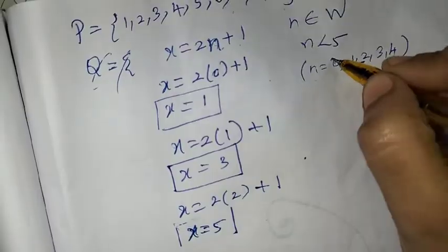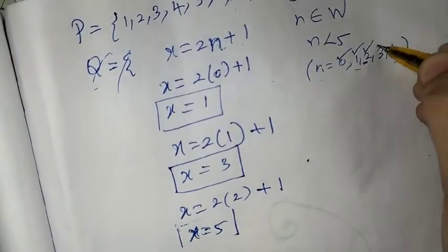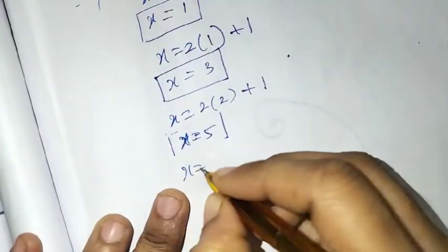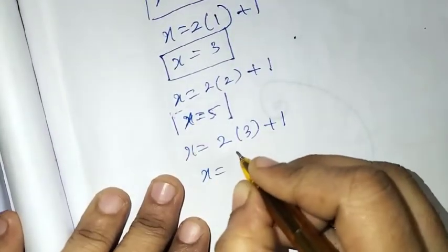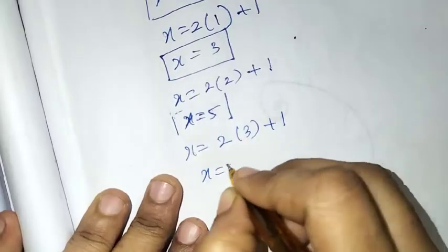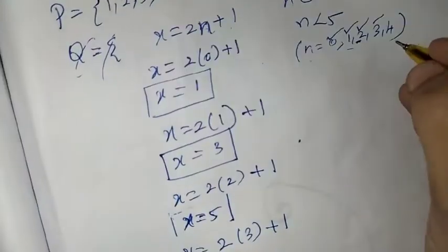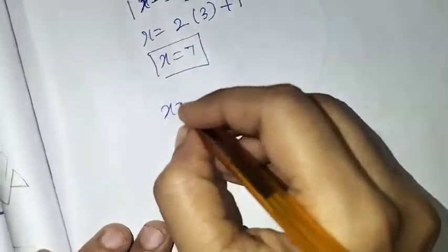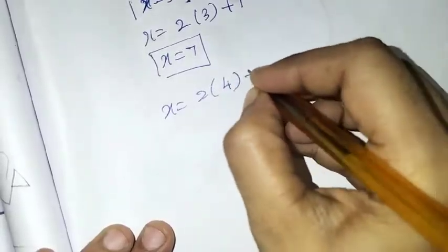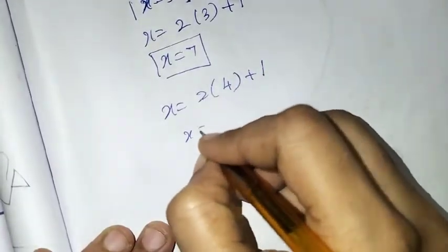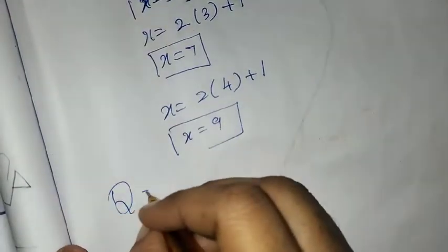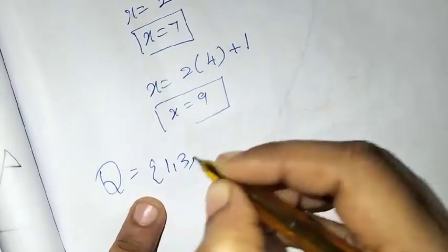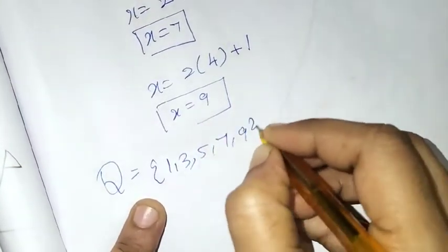So n is 0, 1, 2, 3, 4. When n equals 3, x equals 6 plus 1 equals 7. When n equals 4, x equals 9. So Q equals {1, 3, 5, 7, 9}.